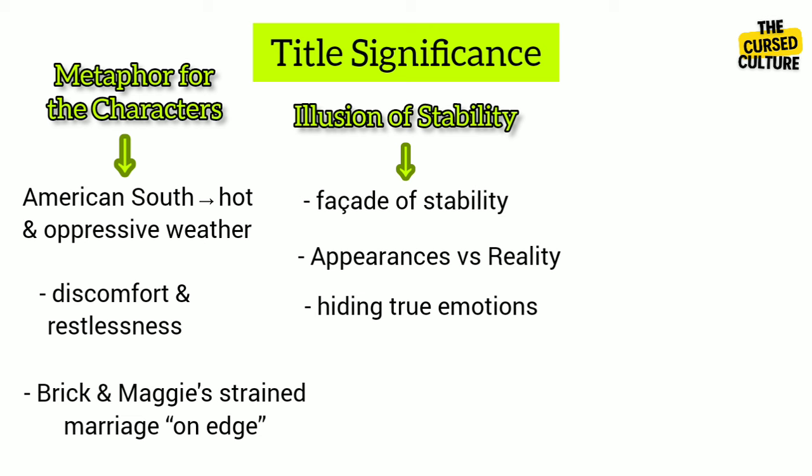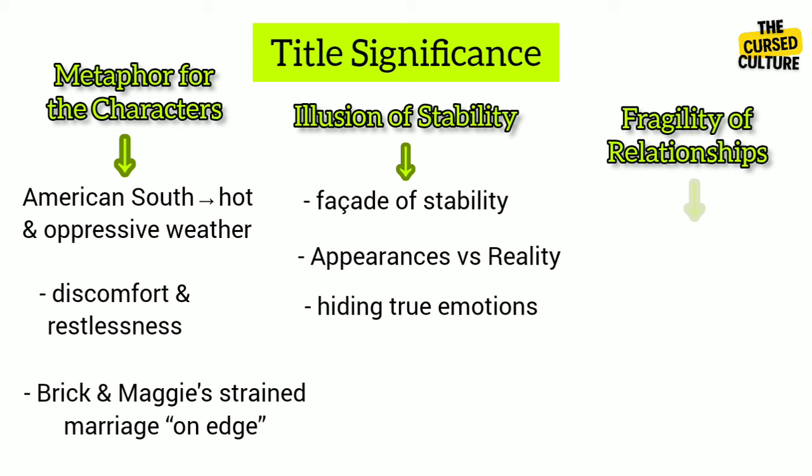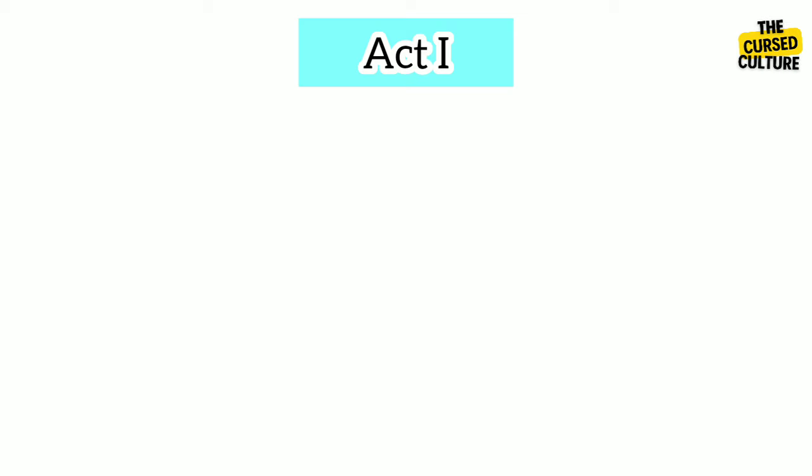Cats are known for their agility and ability to navigate tricky situations, but even they can lose their footing on a hot surface. Similarly, the title suggests the fragility of human relationships and the ease with which they can become strained or damaged.